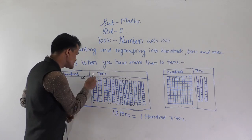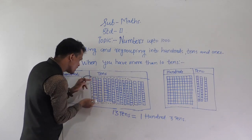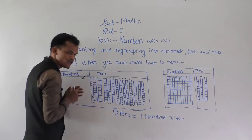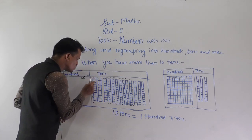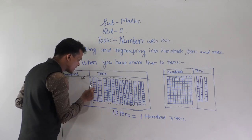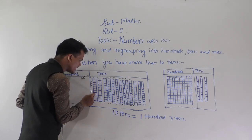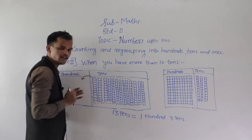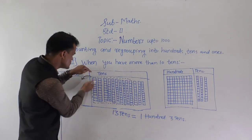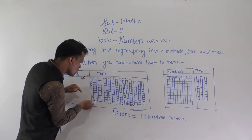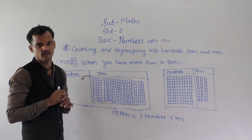See here, this is one column of 10 because it has 1, 2, 3, 4, 5, 6, 7, 8, 9, and 10 ones — meaning it represents 1 ten. So this is 1 ten.